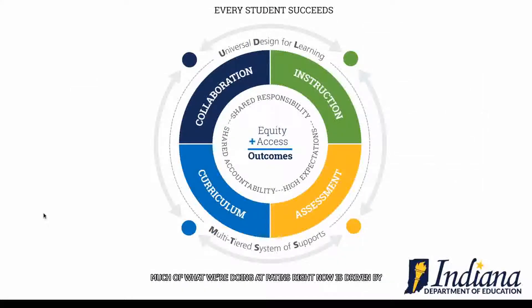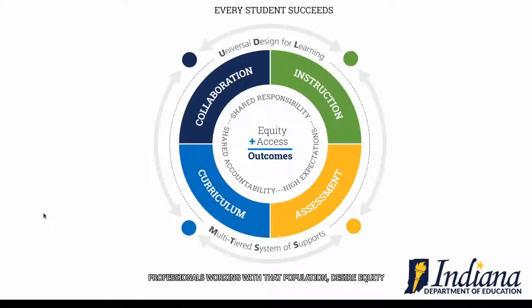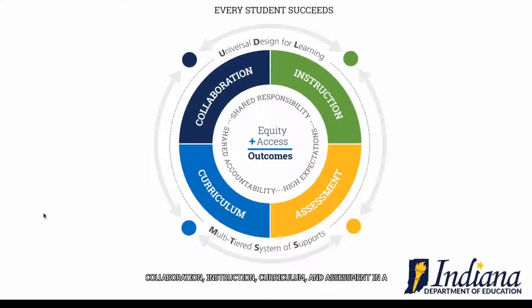Much of what we're doing at PATINS right now is driven by what is described on this graphic, developed by this state in response to the Every Student Succeeds Act, the ESSA letter. We as teachers for the blind and low vision and other professionals working with that population desire equity and access so that we get great outcomes from our students. This diagram delineates how that can be done through collaboration, instruction, curriculum, and assessment in a universal design learning environment.